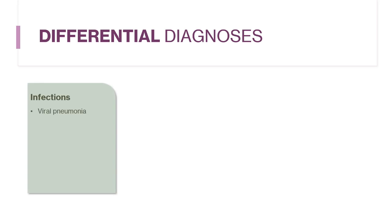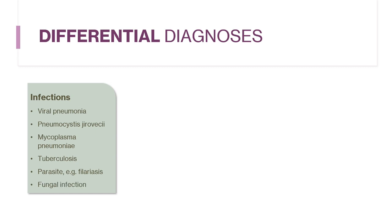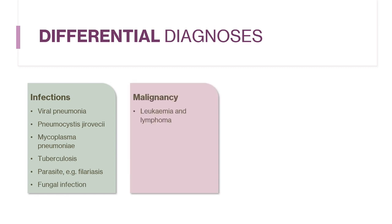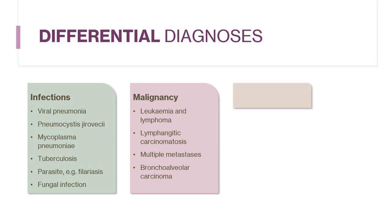Differential diagnosis: some conditions may mimic DPLDs and need to be differentiated. These include infections such as viral pneumonia, Pneumocystis jirovecii infection, mycoplasma pneumonia, tuberculosis, parasites like filariasis, and certain fungal infections. Malignancies including leukemia and lymphoma, lymphangitic carcinomatosis, multiple metastases, and bronchoalveolar carcinoma also need consideration. At times, even pulmonary edema and aspiration pneumonitis need to be differentiated from DPLDs.